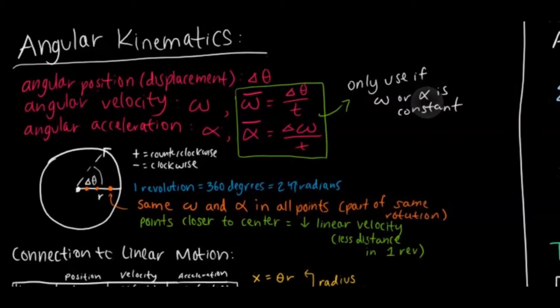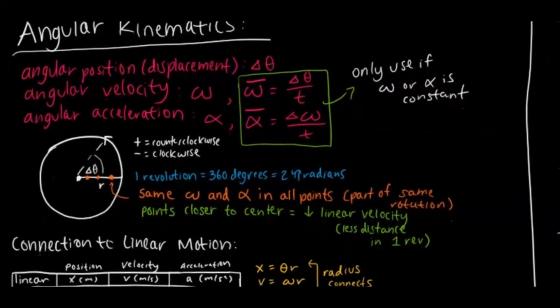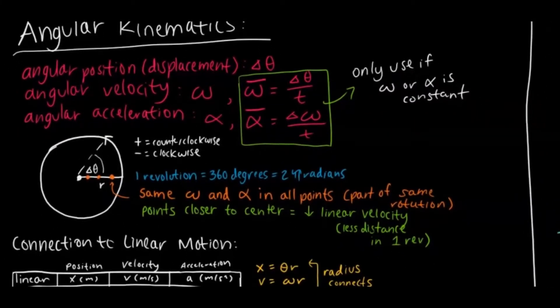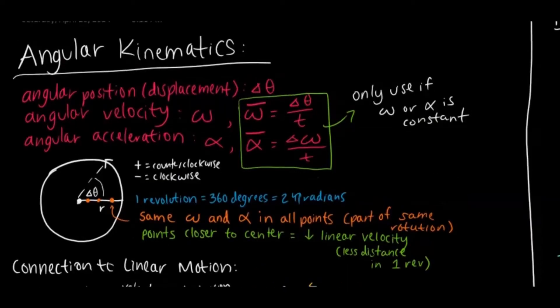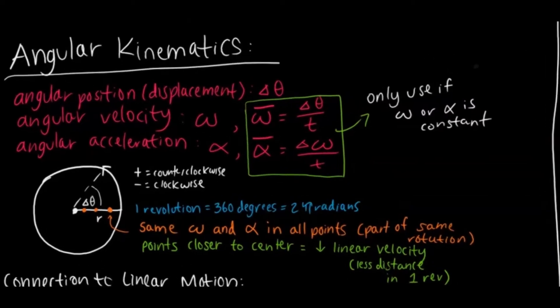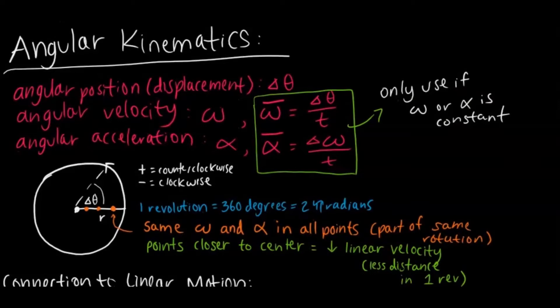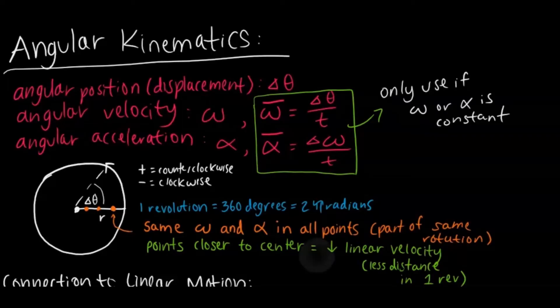So the first topic here is angular kinematics. The thing with this unit is it's kind of a summary of everything you've learned so far this year. The first unit is kinematics and now we have angular kinematics, so it's sort of a spin-off of that. Just a couple key terms here: angular position, which we can represent as the displacement, is just change in the angle. There is angular velocity, which is represented by this omega looking symbol, and then there's angular acceleration, which is this alpha looking symbol.